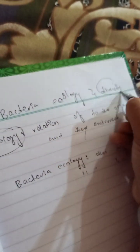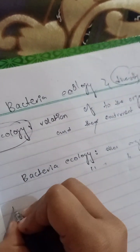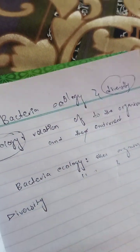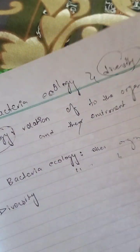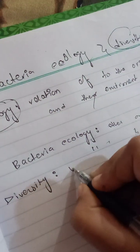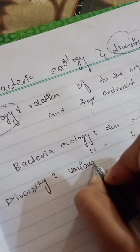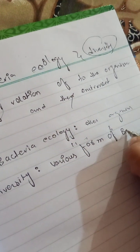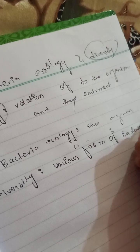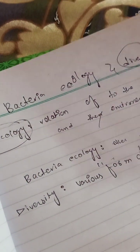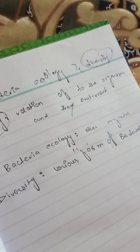Diversity means the various types or different forms of bacterial species. There are many species, and the various forms of bacteria species is what we call bacteria diversity.